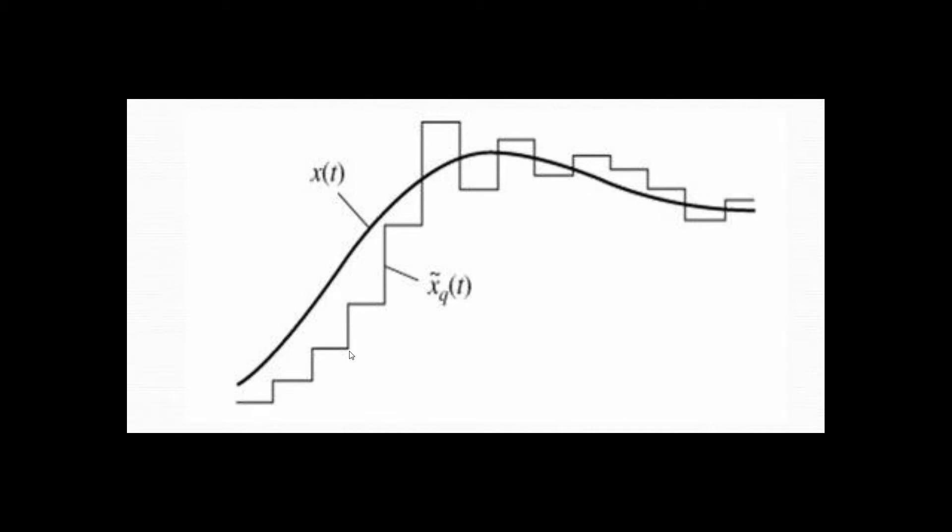So adaptive delta modulation is, if you notice here, as the steps go up, as it recognizes that it needs more steps, it actually increases the step size that appears here. And so as it goes up and down more, it decreases the step size. This is the benefit that comes from adaptive delta modulation.